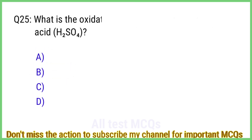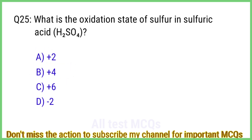Question number 25. What is the oxidation state of sulfur in sulfuric acid H2SO4? The right answer is option C: Plus 6.